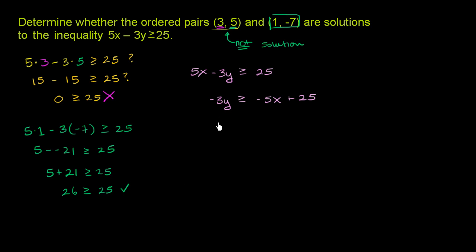Now let's divide both sides of this inequality by negative 3. And when you divide both sides of an inequality by a negative number, it swaps the inequality. So if you divide both sides by negative 3, you get y is less than or equal to 5 over 3x minus 25 over 3.